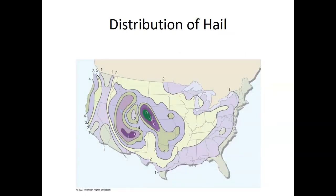Where is hail most common in the United States? Hail is actually most common in eastern Colorado, southwest Wyoming, and into Nebraska — that region is where hail is most frequent. Interestingly, just to the east of that region is where tornadoes are most common — we'll talk more about that in a few weeks. But that's how hail forms.